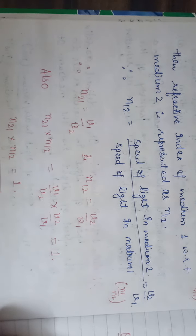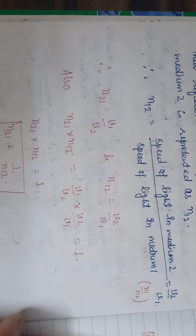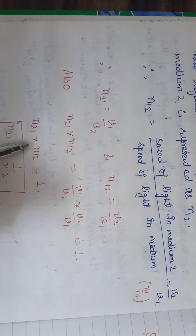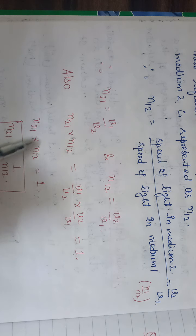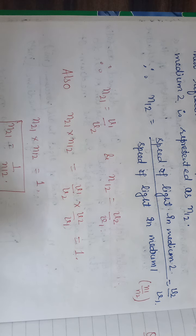If we multiply these two together, we get 1 — their product is equal to 1. So we get one more useful formula: the refractive index of medium 2 with respect to 1, multiplied by the refractive index of medium 1 with respect to 2, equals 1. Transposing, the refractive index of medium 2 with respect to 1 equals the reciprocal of the refractive index of medium 1 with respect to 2.